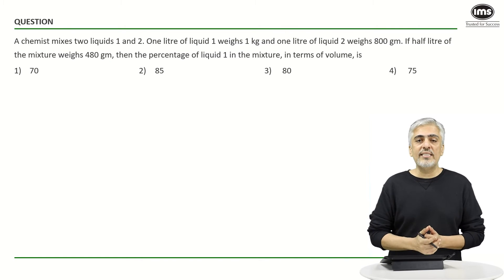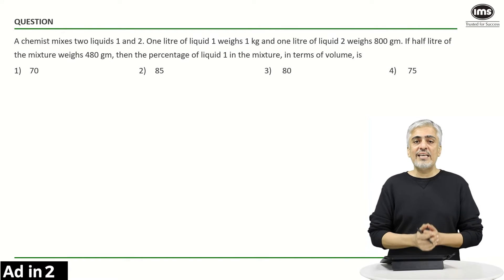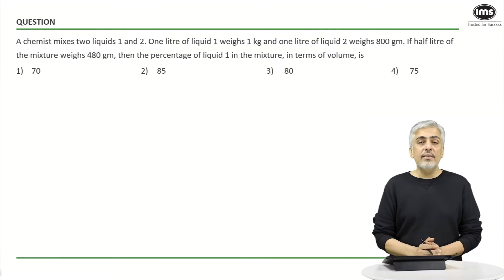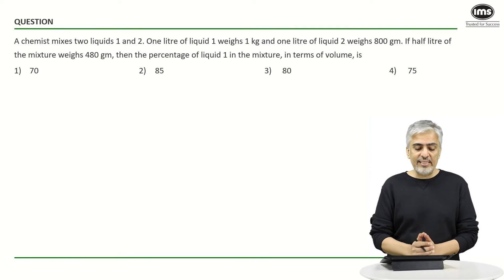Hi everyone, welcome to our series on Best of CAT. Let's have a look at the next question on arithmetic. They've told us a chemist mixes two liquids, 1 and 2. One liter of liquid 1 weighs 1 kg.